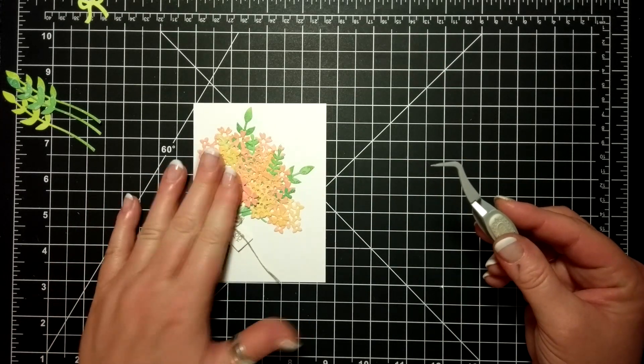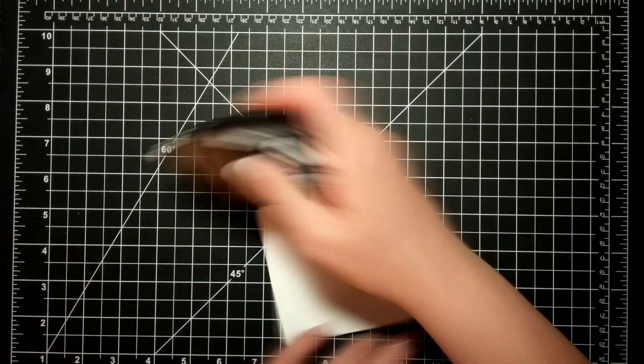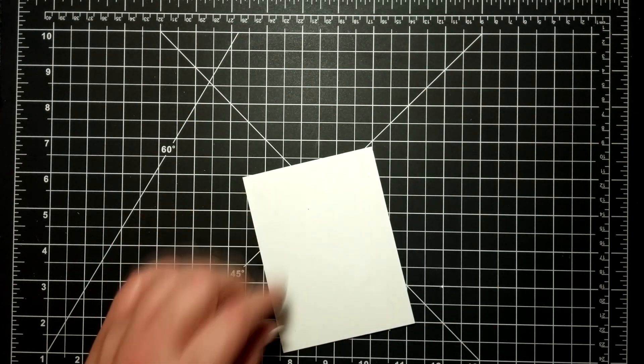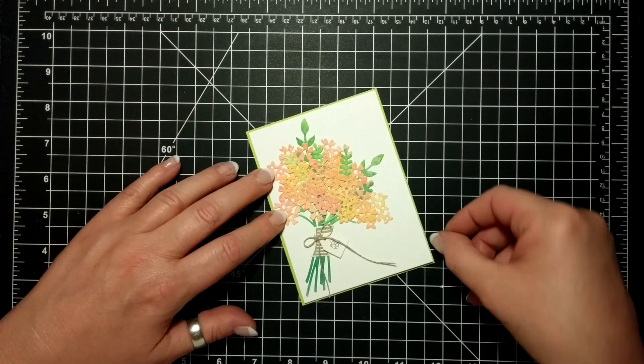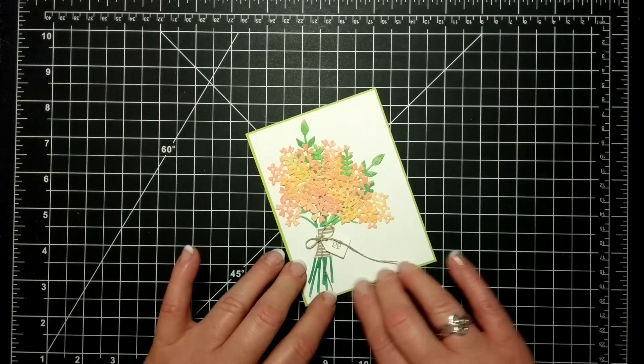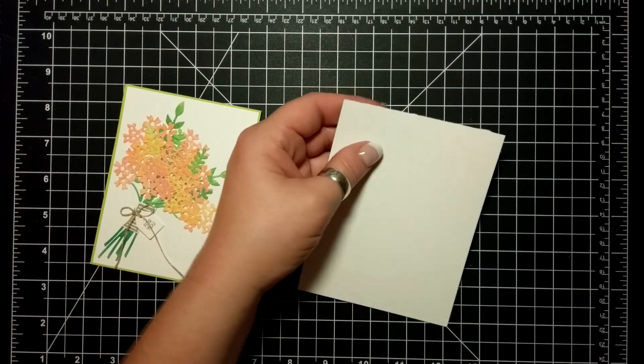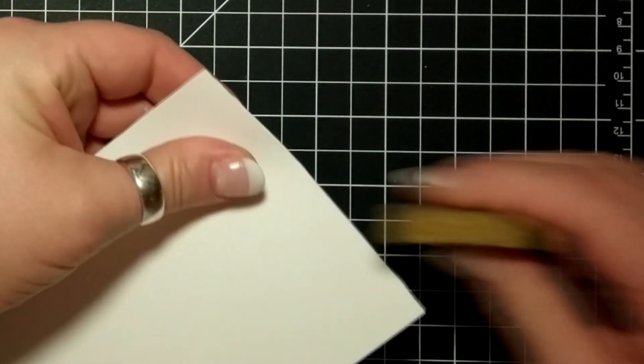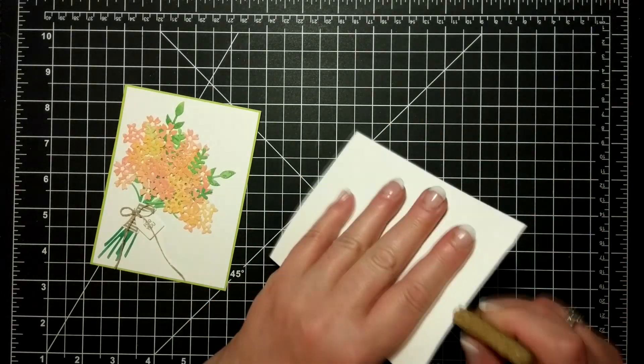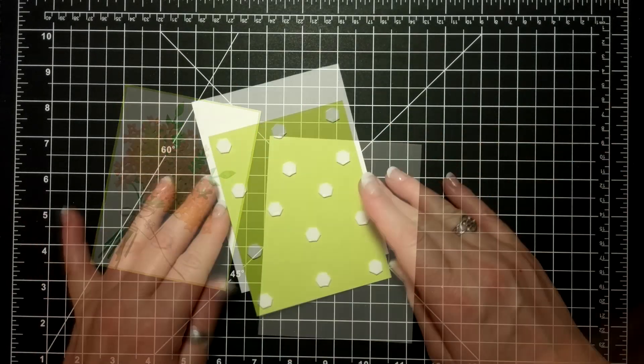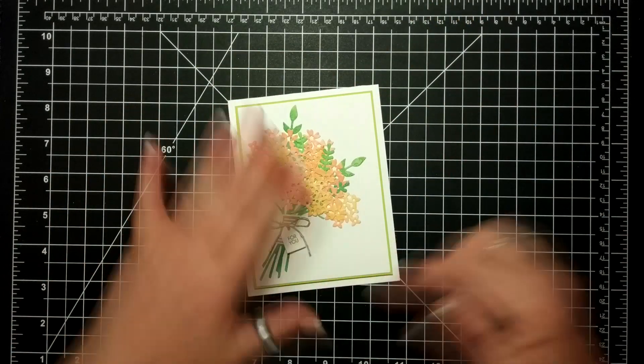You can see how the inking by sponging has created a real variation in color for those blossoms. Then I'm adhering just a little bit of black Fast Fuse to the back, and then I'm placing that on a piece of Lemon Lime Twist—my favorite cardstock. Here is a little trick: this is called an adhesive remover, and if you ever get cracked paper, you just run your adhesive remover along it and there you go.